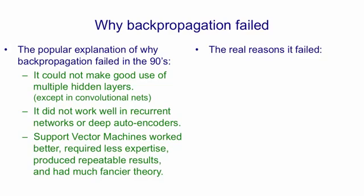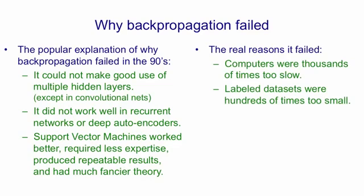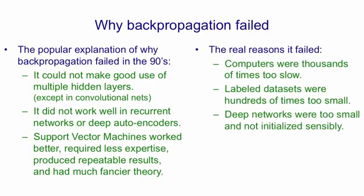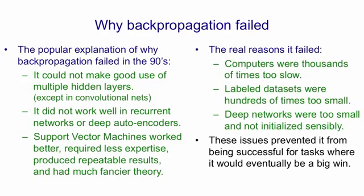With a more historical perspective, we can see why it really failed. The computers were thousands of times too slow, and the labelled data sets were hundreds of times too small for the regime in which backpropagation would really shine. Also, the deep networks, as well as being too small, were not sensibly initialised, and so backpropagating through deep networks didn't work well because the gradients tended to die — the initial weights were typically too small. These issues prevented backpropagation from being successful for tasks like vision and speech, where it would eventually be a big win.